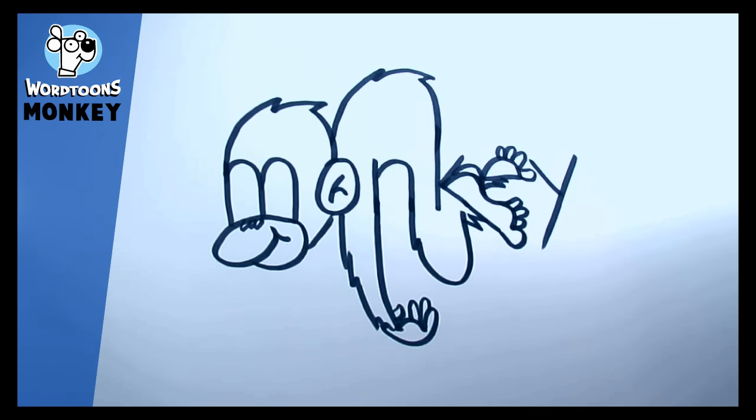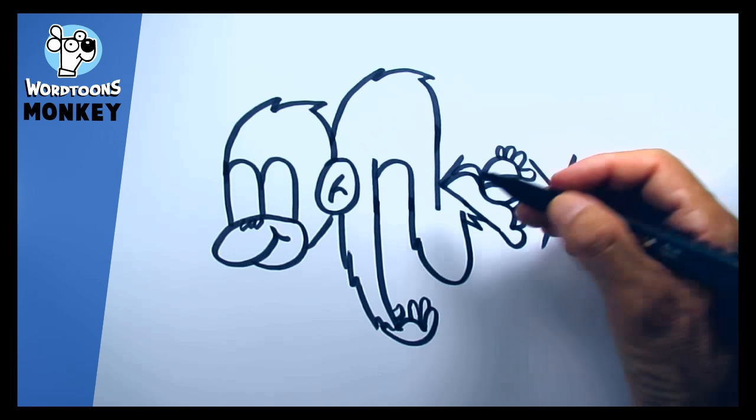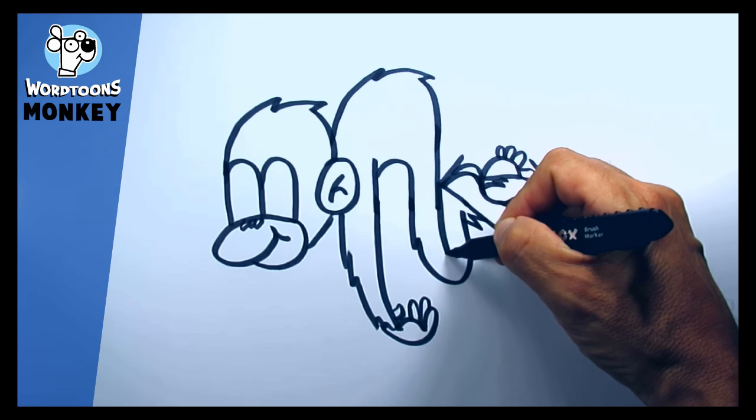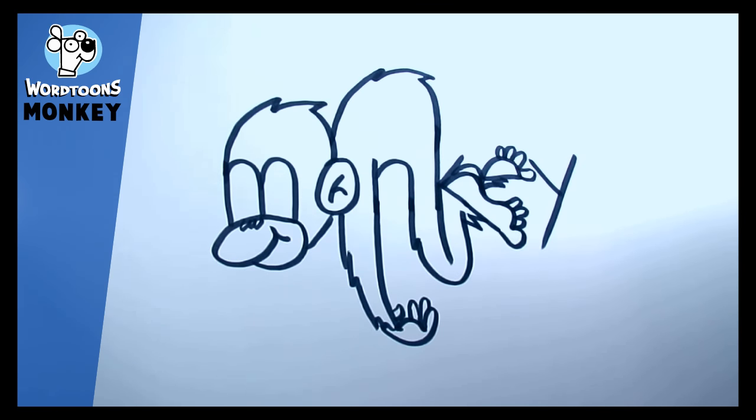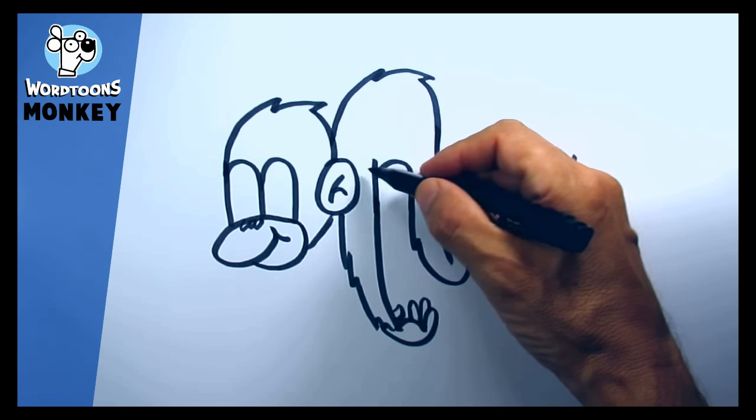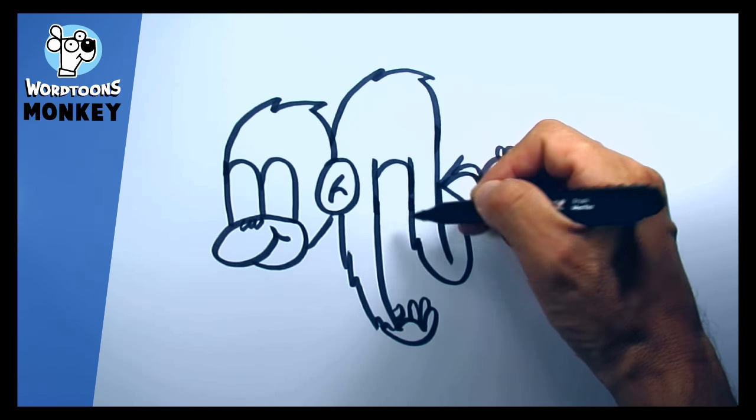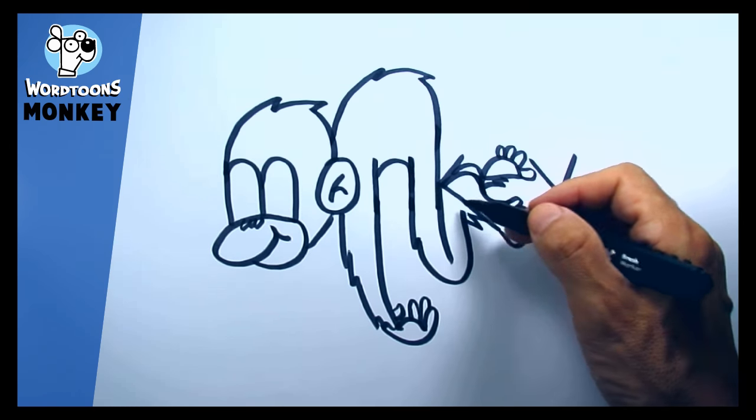You can see now already he's looking, you can see more of the monkey than you can see the word. Curve it in a little bit, just gives his leg a bit better shape, and see this part here we want to add another little bit to show that his leg is on the side.